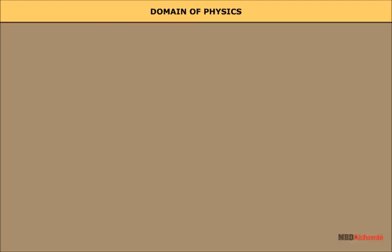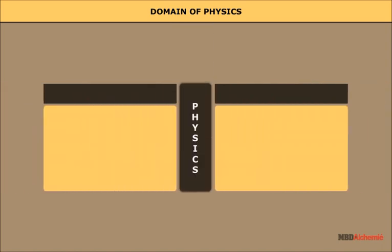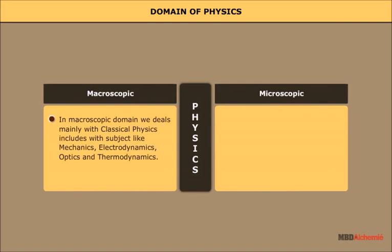Domain of Physics. Basically, there are two domains of interest, macroscopic and microscopic. The macroscopic domain includes phenomena at the laboratory, terrestrial and astronomical scales.